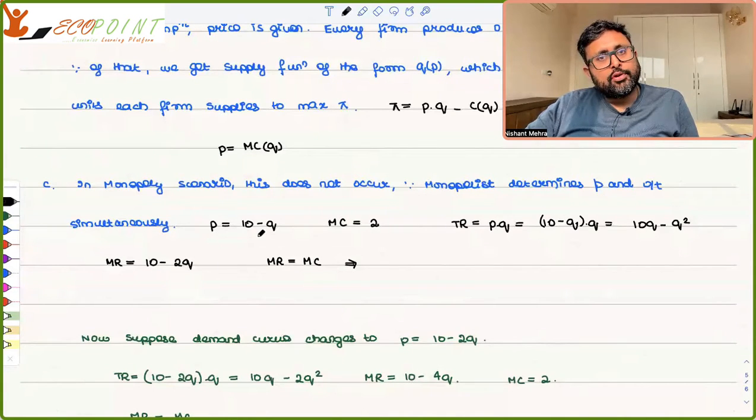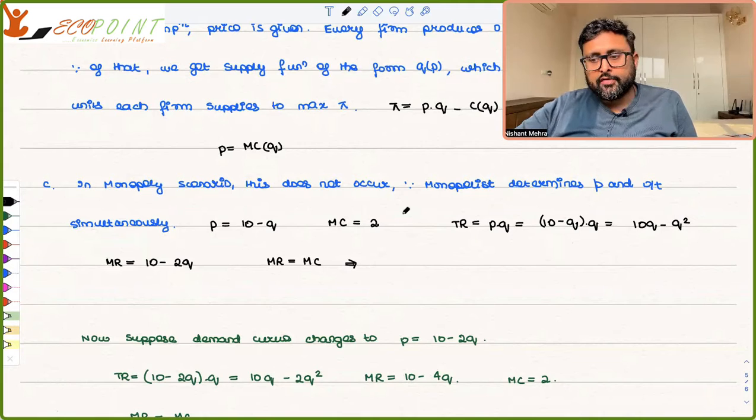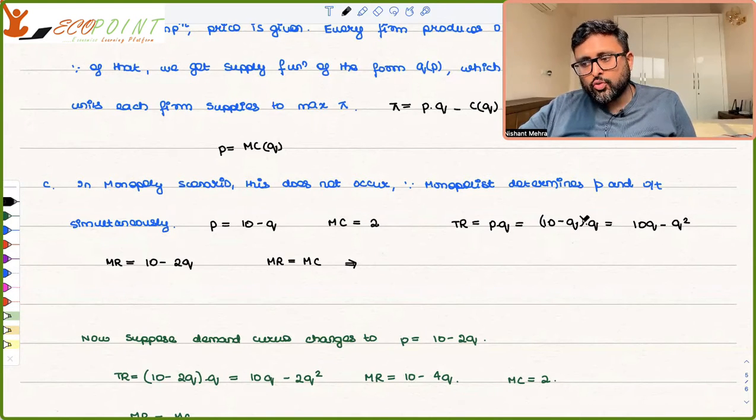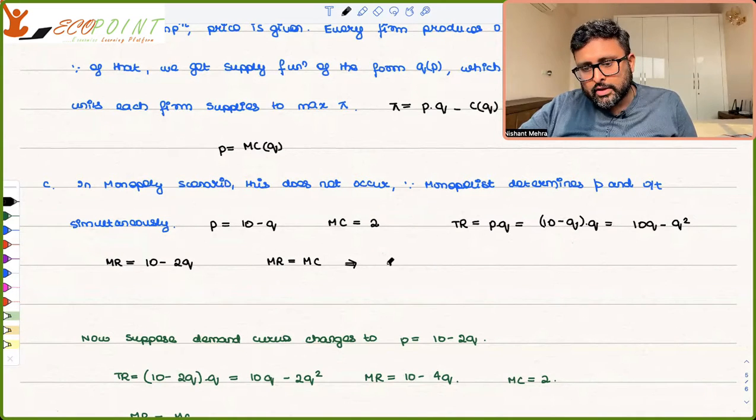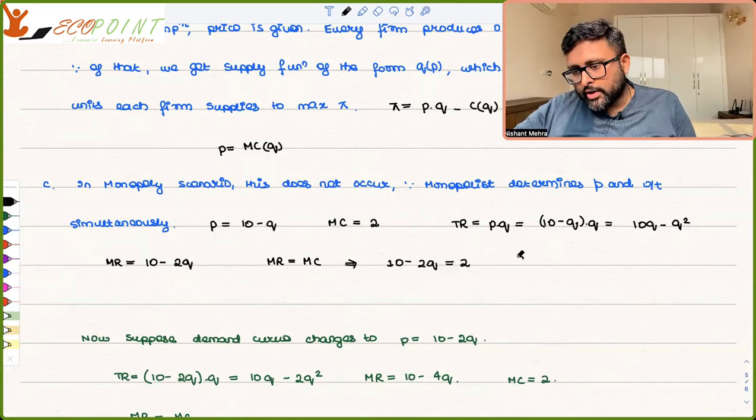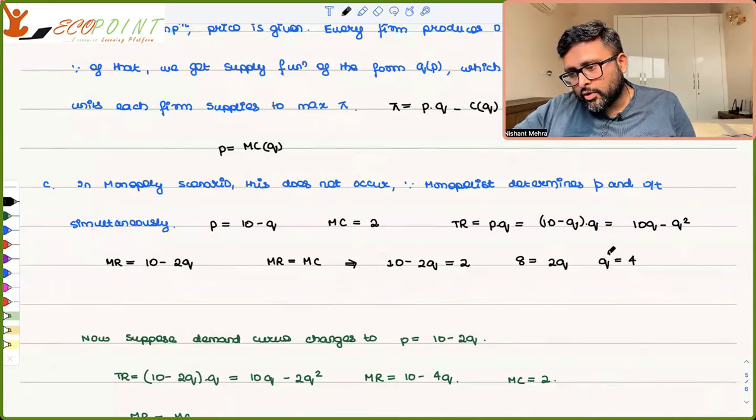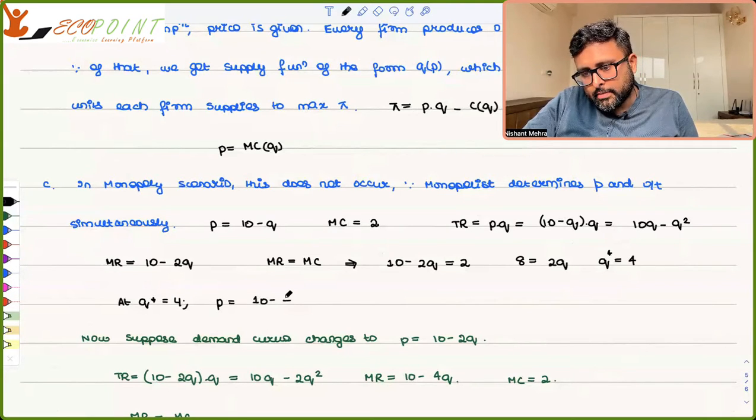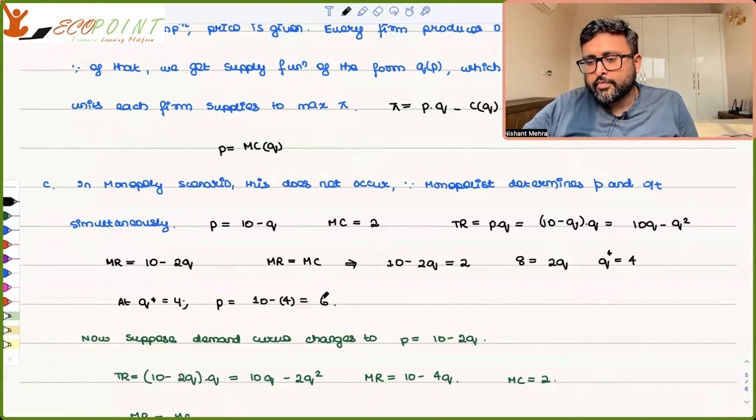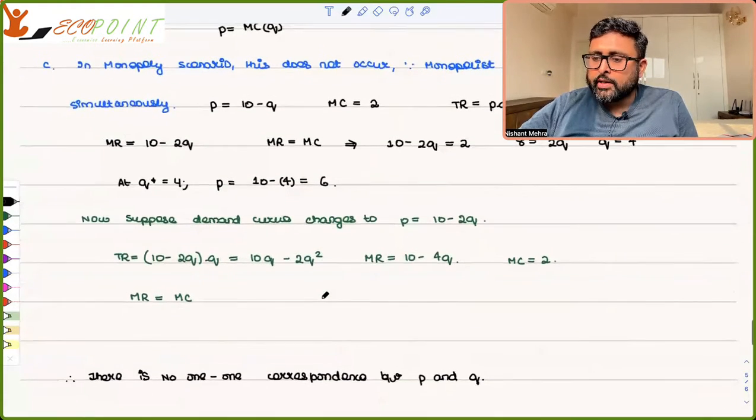So supposedly, if the demand function is P is equal to 10 minus Q, MC is 2. I can find out TR. TR is P into Q, which is 10 minus Q into Q, which is 10Q minus Q squared. So what is MR? 10 minus 2Q. Monopolist's profit maximization condition is MR equal to MC. So that would mean 10 minus 2Q equals to 2. So you get 8 equals to 2Q. So you have Q star equals to 4. And what happens is that at Q star equals to 4, you can find out your price, which comes out to be 10 minus 4, which is 6.